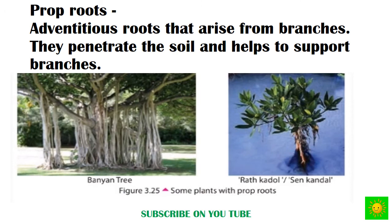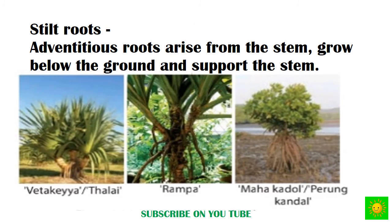The next type is prop roots. Adventitious roots that arise from branches, penetrate the soil, and help to support those branches. An example is banyan. Stilt roots are adventitious roots that arise from the stem, grow down into the ground, and support the stem.